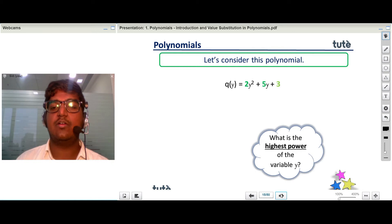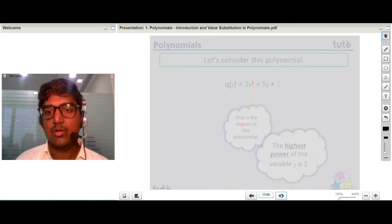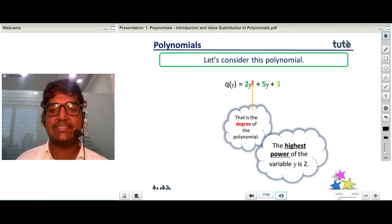What is the highest power of this particular variable in this polynomial? As you can see, there are different powers, 2 and 1, but the highest power is 2. Then in this case, we say that is the degree of this particular polynomial.